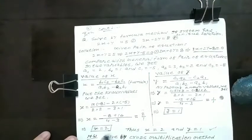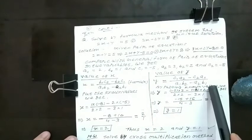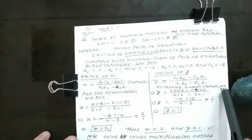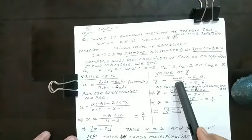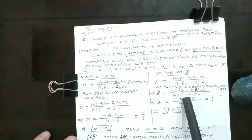Similarly, y equals c1a2 minus c2a1 upon a1b2 minus a2b1. By putting known values: c1 is minus 5, a2 is 3, c2 is minus 8, a1 is 2.